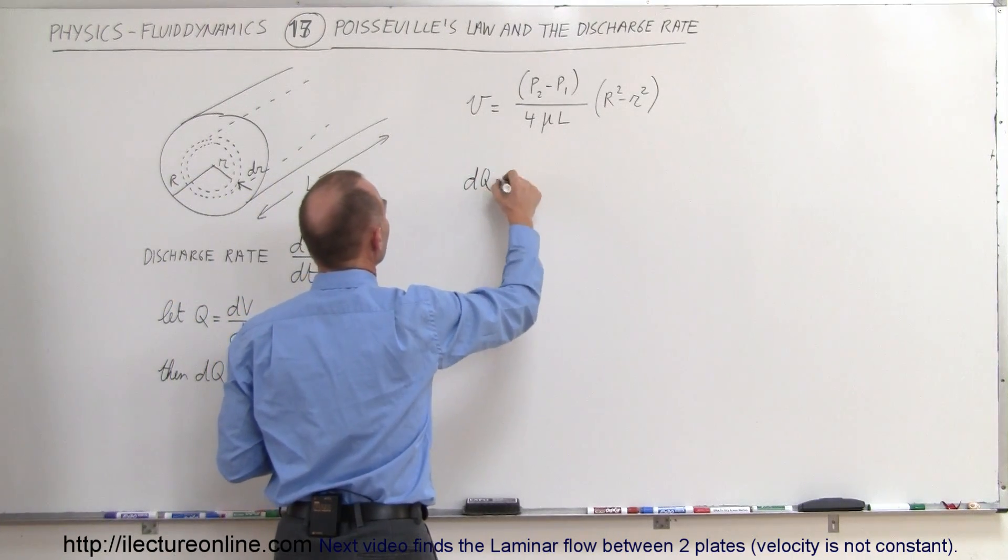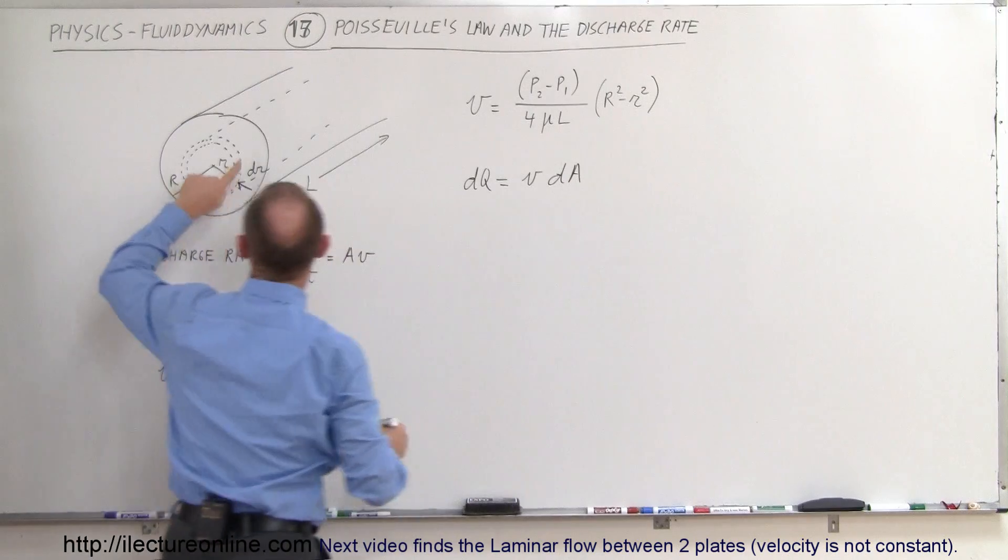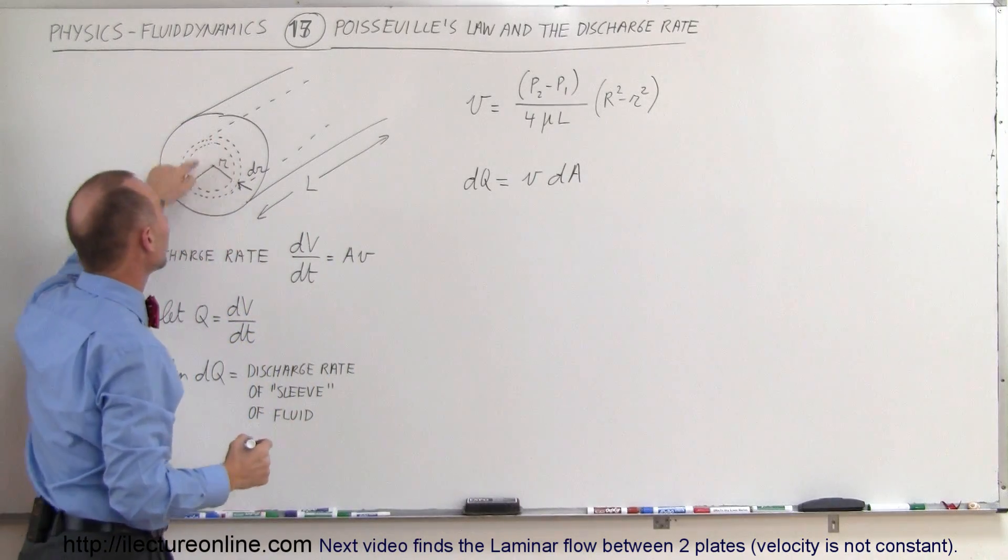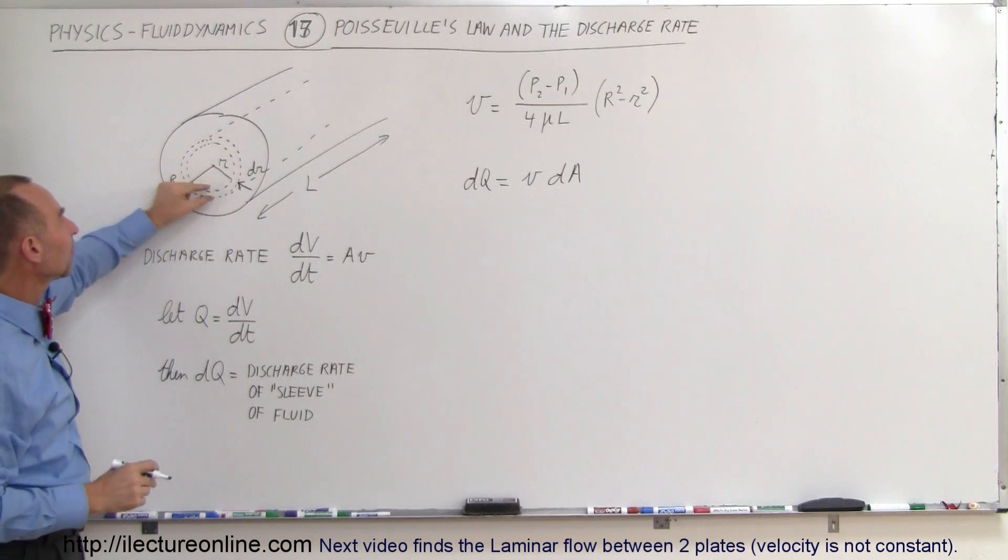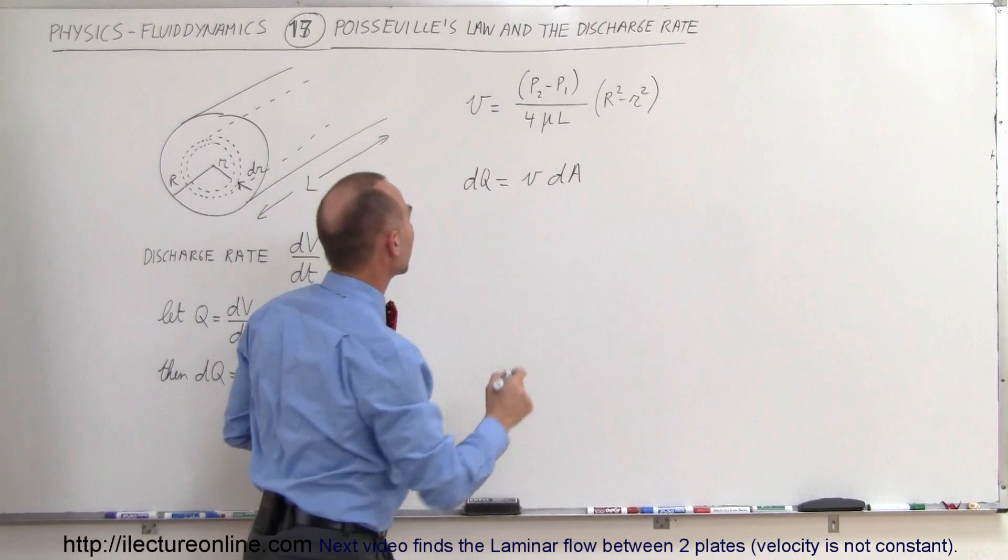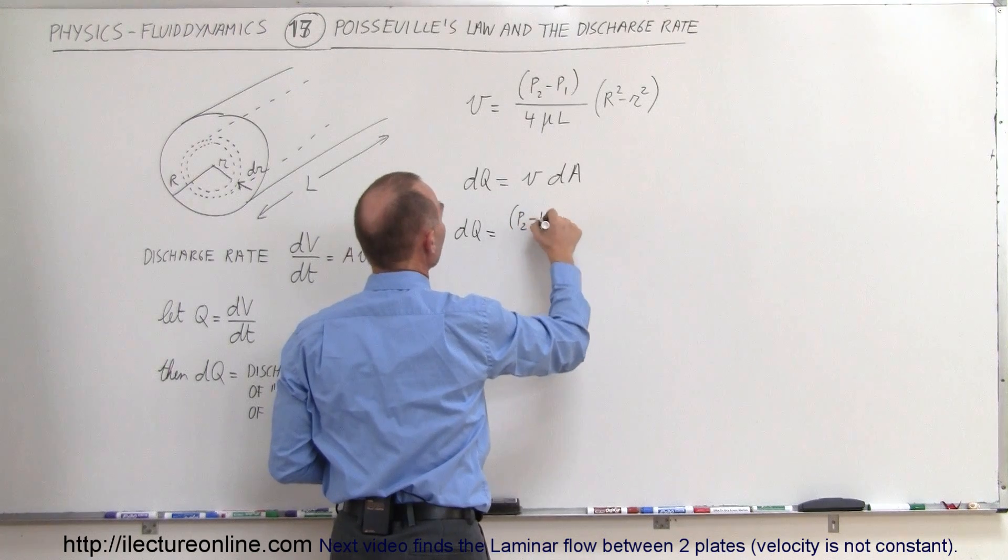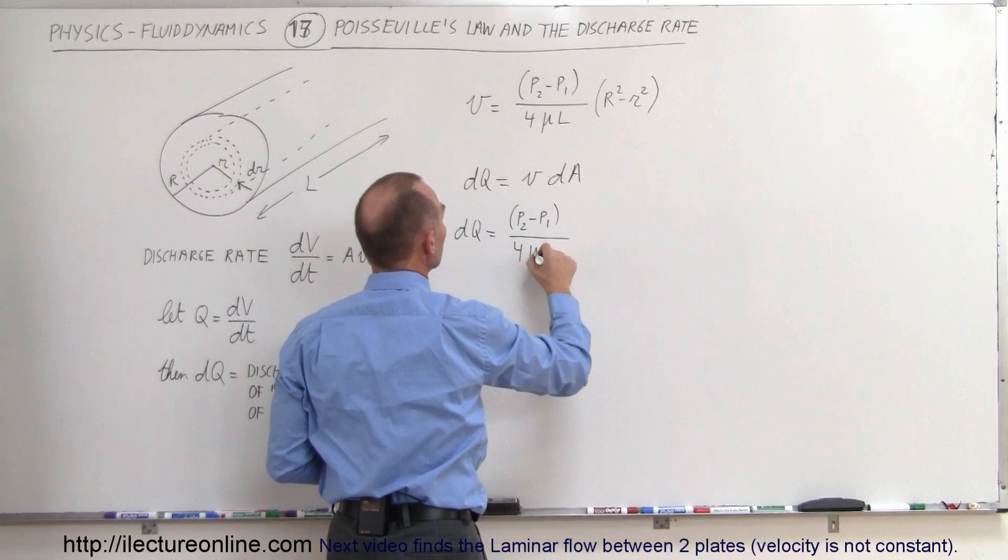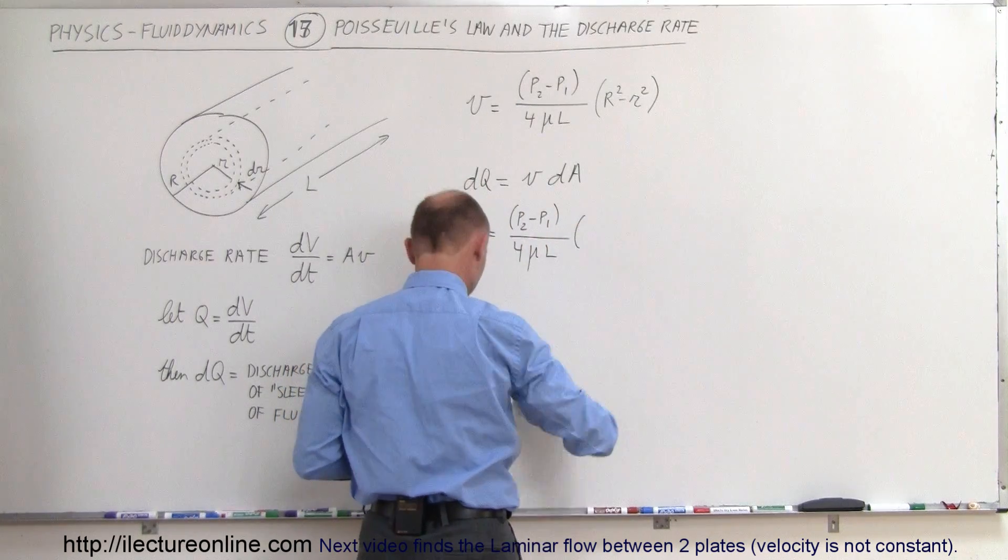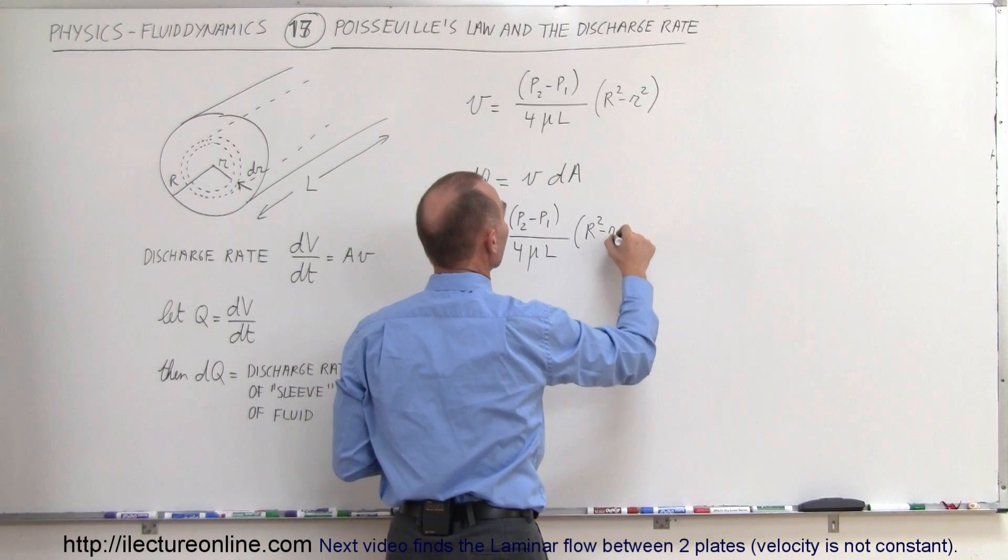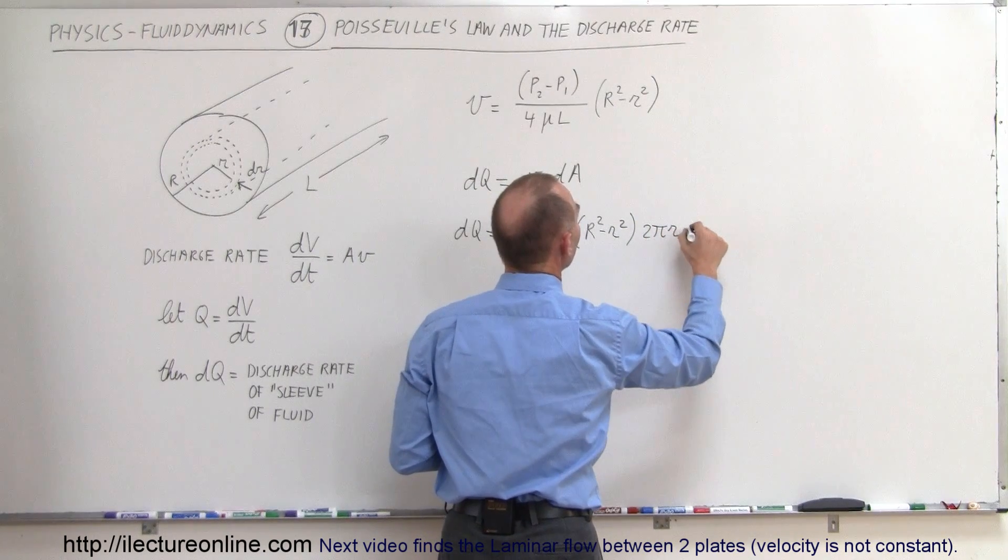Therefore, we can then say that dq is equal to the velocity times dA. So it would be the cross-sectional area of the small little sleeve of fluid coming through. And the dA would be equal to the circumference times the thickness, and v would come from this equation right here, which means that dq is going to be equal to the difference in the pressure, p2 minus p1, divided by 4 mu times L, times the radius of the pipe squared, minus little r squared, times dA, which is going to be 2 pi r times dr.